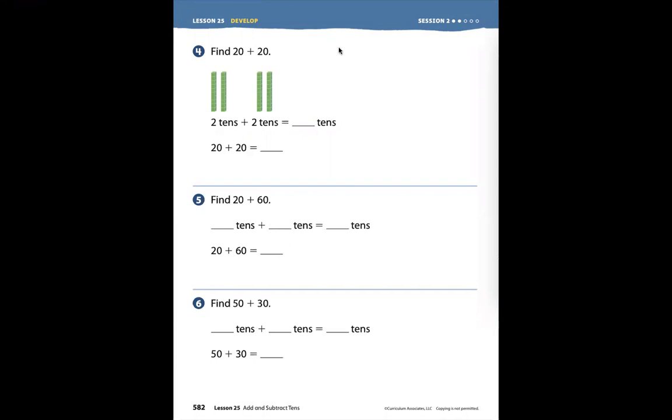Well, if we know our addition doubles, we can see that there is a 2 in the tens place and a 2 in the tens place, and we can add our addition double. 2 plus 2 equals 4. So we can say that 2 tens plus 2 tens is 4 tens.